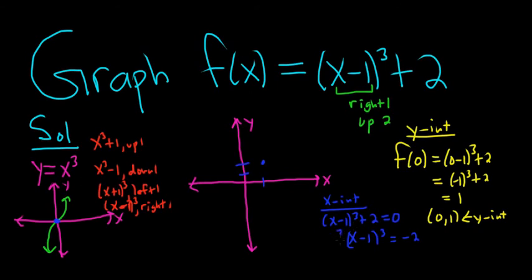Now to get rid of the 3, we'll take the cube root of both sides. So we get x minus 1 equals the cube root of negative 2. And then to finish, we would just add 1. So we end up with x equals 1 plus the cube root of negative 2. So what is this number?